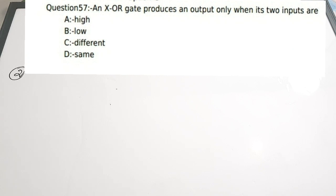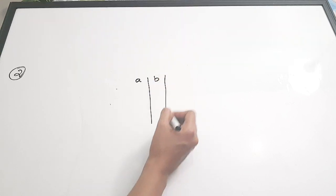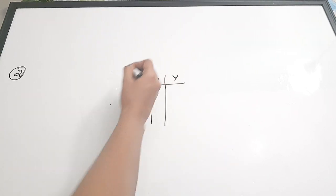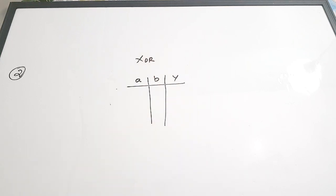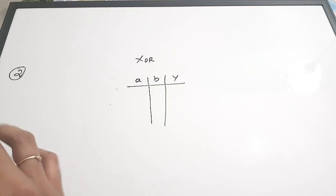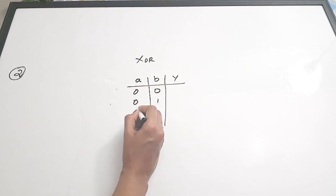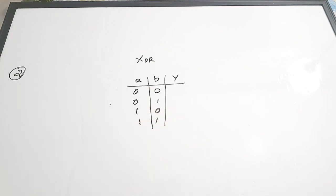Second question: An XOR gate produces an output only when two inputs are — A) high, B) low, C) different, D) same. Let's see the truth table of an XOR gate. Let the inputs be A, B and the output be Y. The combinations are: 0,0 → 0; 0,1 → 1; 1,0 → 1; 1,1 → 0.